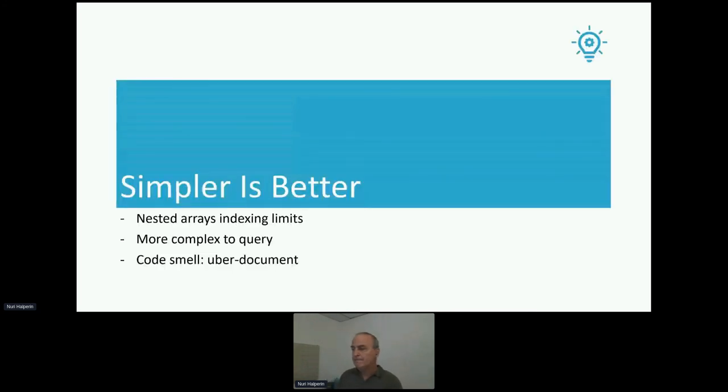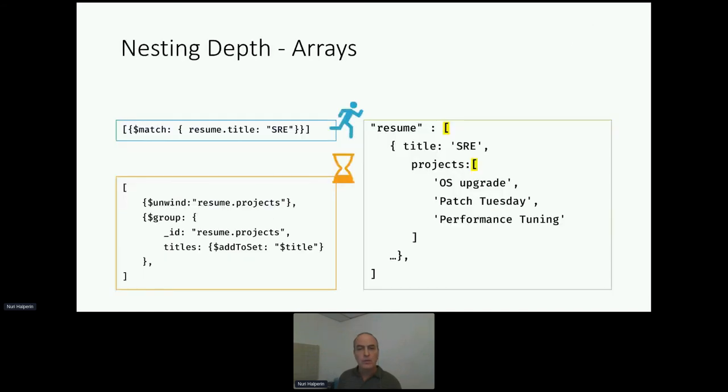Simpler is also better. We want to keep documents simple. And the reason we want to keep documents simple is limitations around indexing as well as the necessity to unwind them in order to address them with operator. On the bottom left, we're seeing an aggregation query. And because our document here on the right has embedded arrays within arrays, we have to unwind twice in order to get to a certain project inside a job experience. So it's just more processing. More complex is more work.